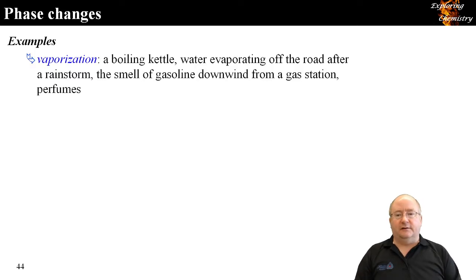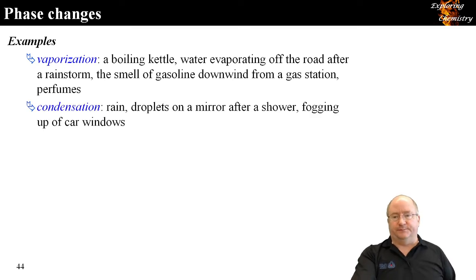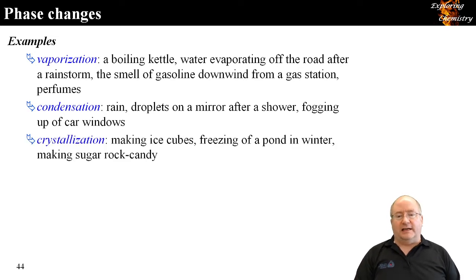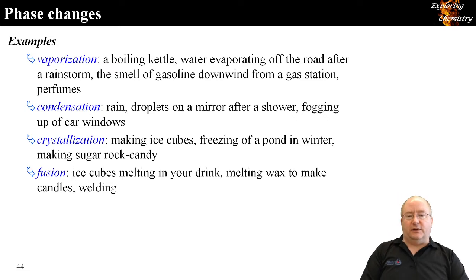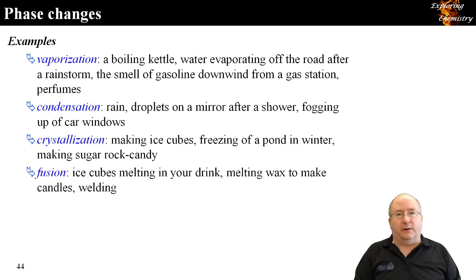Some real-world examples: vaporization — boiling a kettle, smelling gasoline downwind from a gas station, or smelling perfume at some other location. Condensation — rain, or the fog that forms on your mirror after a hot shower, where water vapor condenses on the mirror. Crystallization — making ice cubes, freezing water, making rock candy sugar. Fusion is the melting process — melting ice, melting wax for candles, or welding, where metal is heated to melt as part of the process.